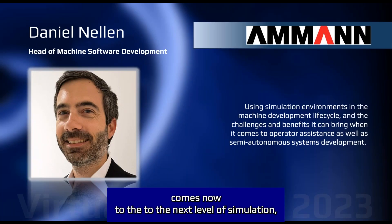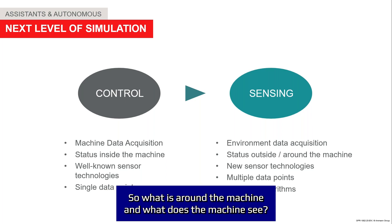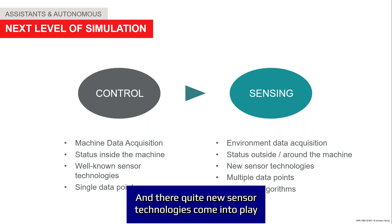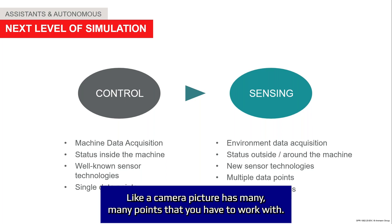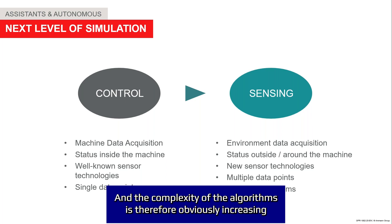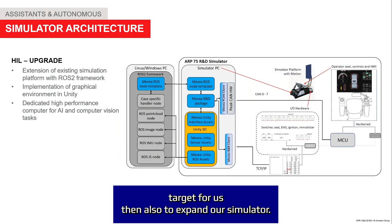When it comes to the next level of simulation, we need to acquire the environment — what is around the machine and what does the machine see, or what would the operator see. Quite new sensor technologies come into play, and we have to work with multiple data points. A camera picture, for instance, has many many points that you have to work with, and the complexity of the algorithms is therefore obviously increasing. That was the main target for us: to expand our simulator.